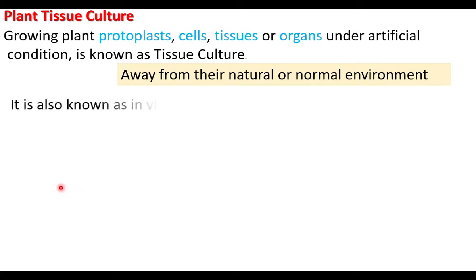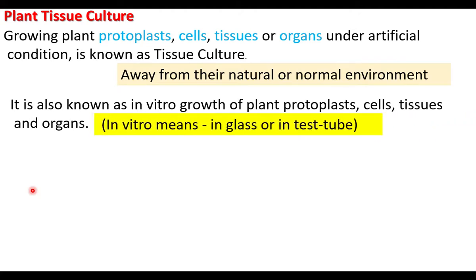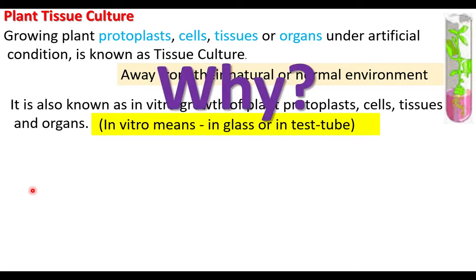Tissue culture is also known as in vitro growth of plant protoplasts, cells, tissues, and organs. In vitro means 'in glass' or 'in test tube.' Why do we grow plants in glass or test tubes using the in vitro method?